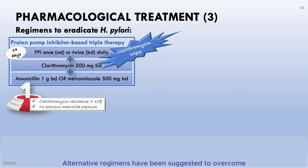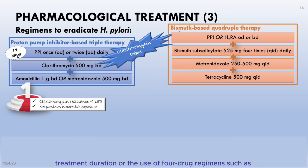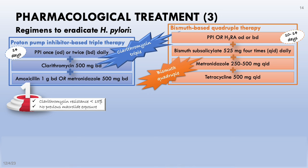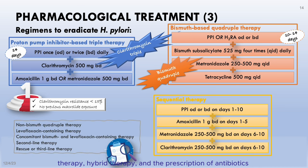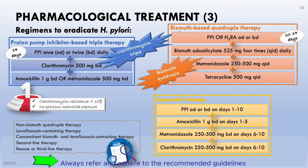Alternative regimens have been suggested to overcome treatment failure of triple therapy. This includes extending the treatment duration or using four-drug regimens such as bismuth-based quadruple therapy — known as the bismuth quadruple protocol — with a treatment duration of 10 to 14 days. Sequential therapy, concomitant therapy, hybrid therapy, and antibiotics such as levofloxacin are other alternatives. Always refer and adhere to the recommended guidelines in your specific situation.